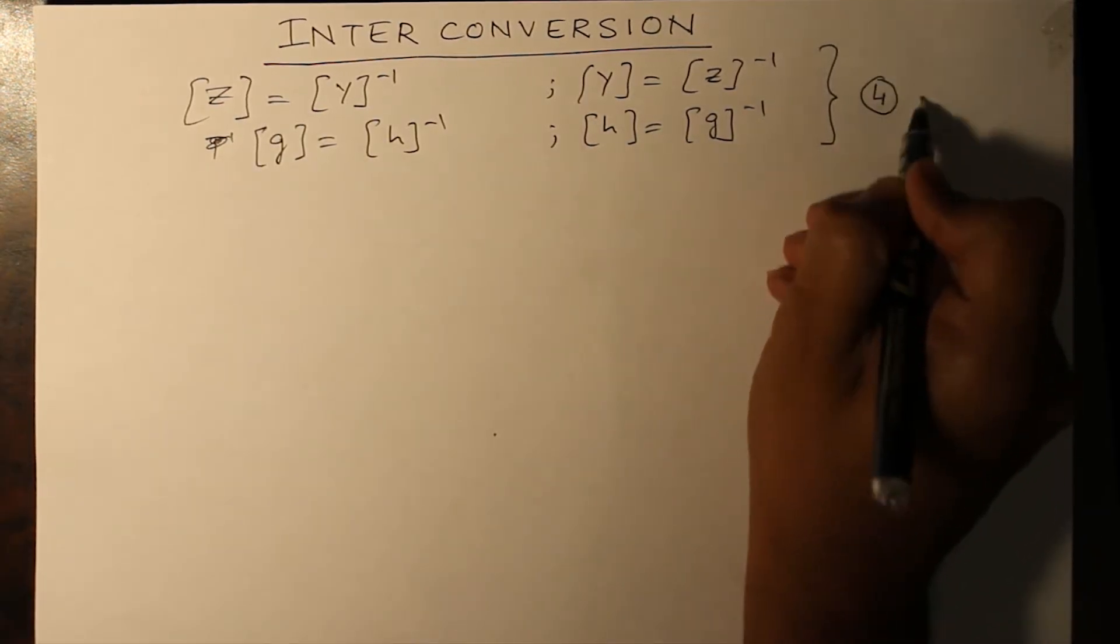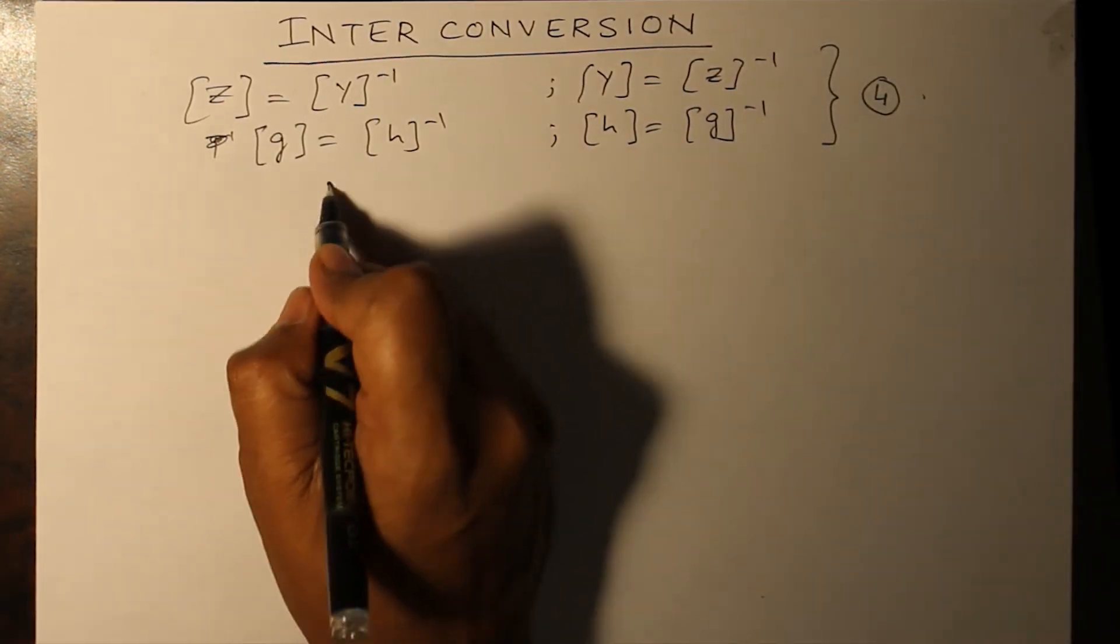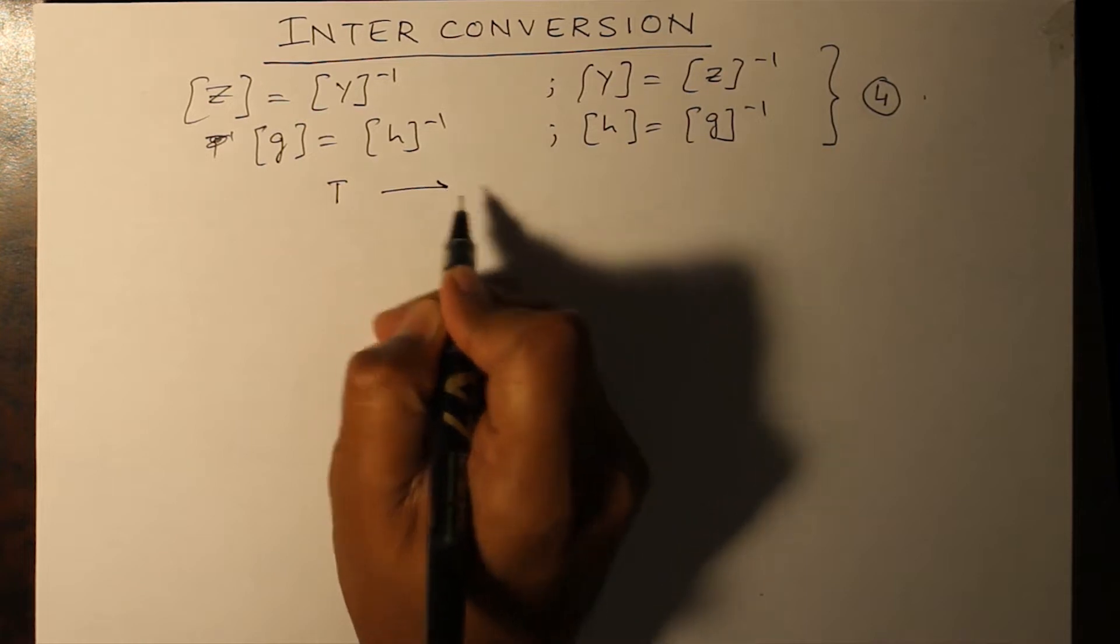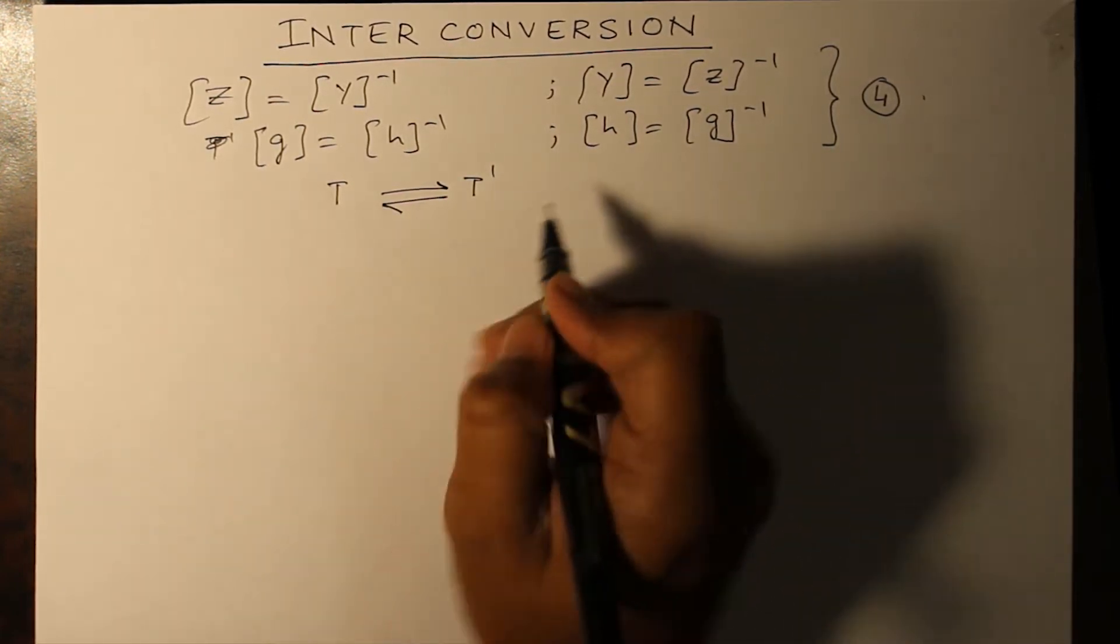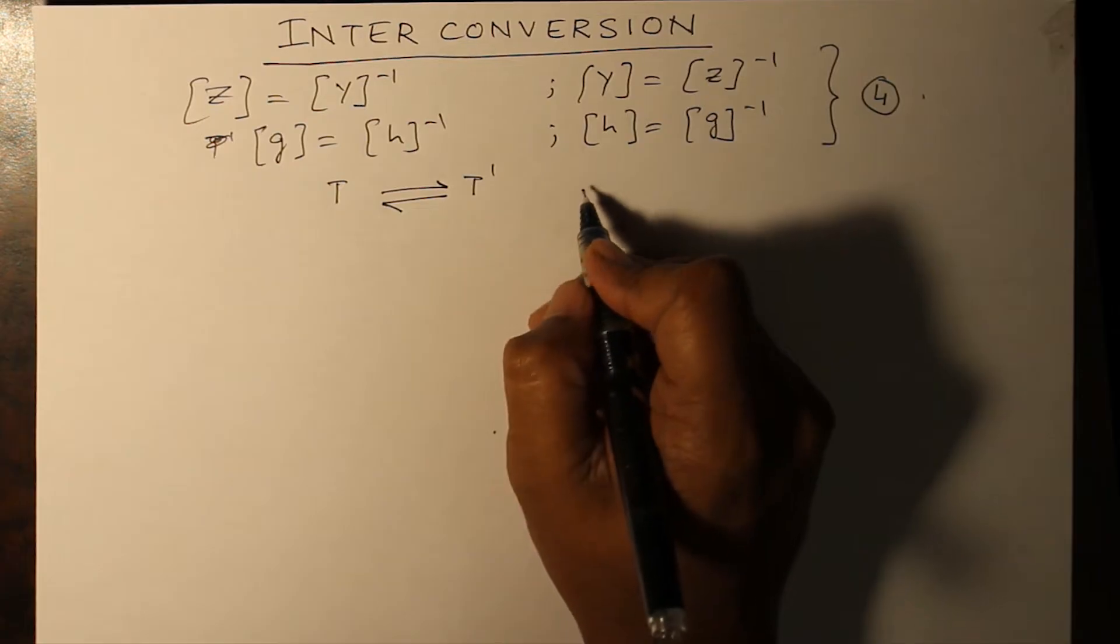Four basic results in order to convert T to T dash or T dash to T by using equations and by simultaneous equation solution.